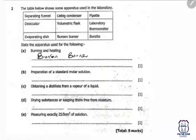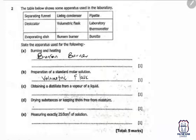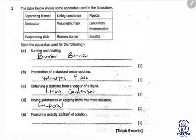For the preparation of a standard molar solution, use a volumetric flask. For obtaining a distillate from a vapor of liquid, use a lab condenser. For drying substances or keeping them free from moisture, use a desiccator. For measuring an exact 25.0 cm³ of a solution, use a pipette.